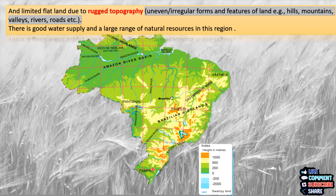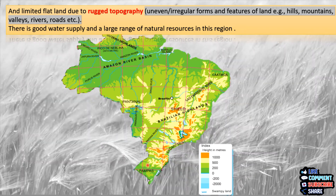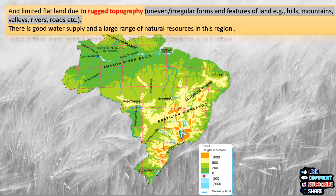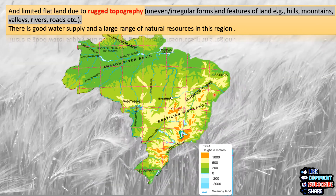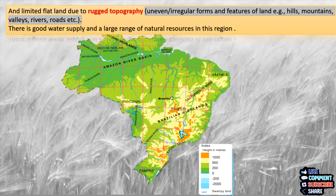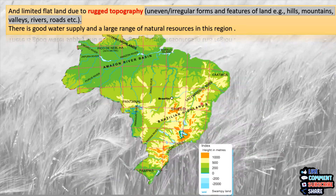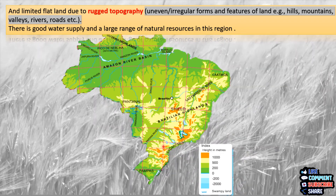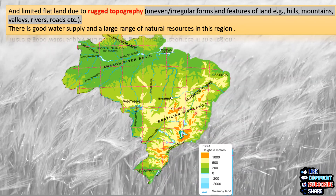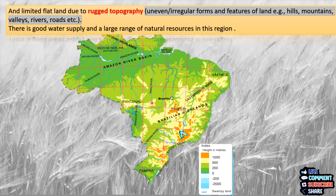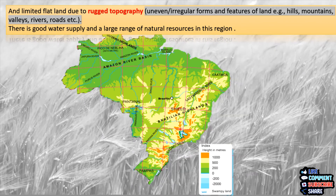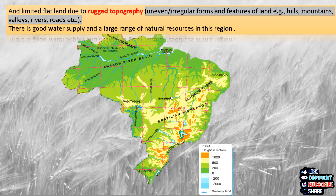If you remember in chapter 3, we learnt about the physical features of Brazil. Going through this map once again, the areas in dark green are the flat lands or plain lands. The ones colored in yellow are the plateaus with heights from 500 to 1000 meters, and the ones in brown have a height of more than 1000 meters. We also see wet swampy lands. Because of all these features, the topography of Brazil is rugged.